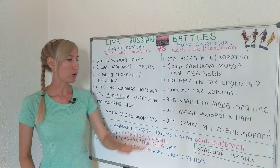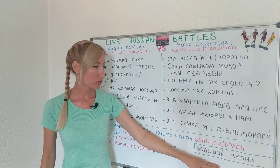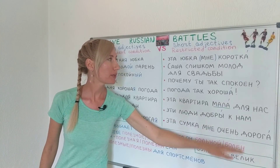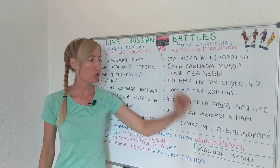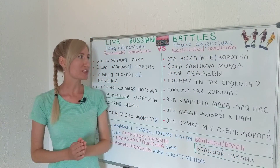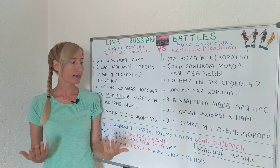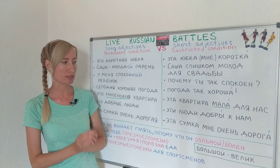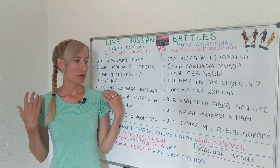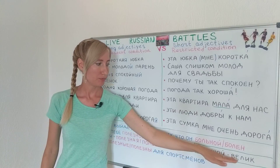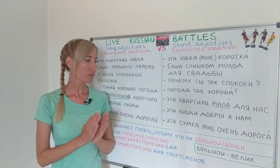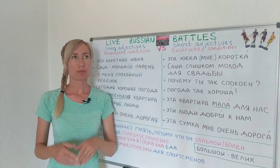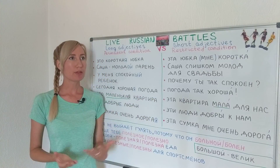I prepared one more exception for you: большой becomes велик in its short form. For example, этот пиджак мне велик — this jacket is too big for me. The feminine form is велика, and the neuter form is велико.